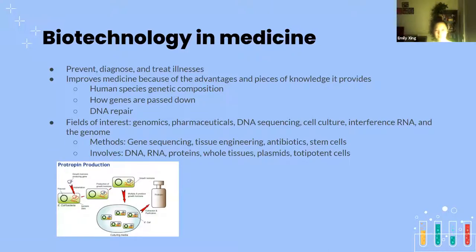There are multiple subfields of medical biotechnology: genomics, dealing with genes; pharmaceuticals, dealing with medication; DNA sequencing, a more specific part of genomics; cell culture, which is making new cells in the lab — for example, culturing growth hormone-containing cells to help people with dwarfism grow taller; and interference RNA, which is a method of trying to suppress genes to not express a disease.